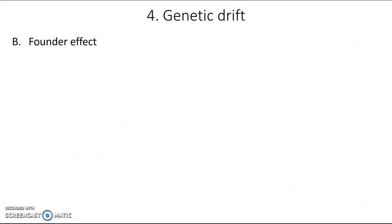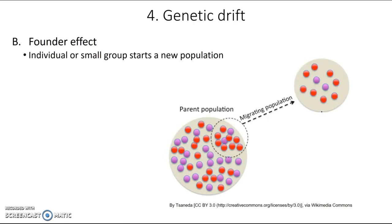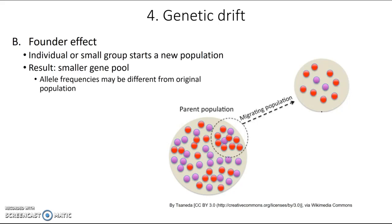The second type of genetic drift is the founder effect, where an individual or small group starts a new population — for example, a few individuals migrating to a new location or an island with no previous members of that species. The result is a smaller gene pool. In the original population there may be a fairly equal balance of purple and red individuals, but the small migrating group might have a higher frequency of alleles coding for red color, different from the original population.